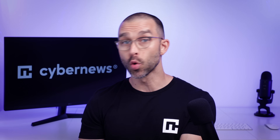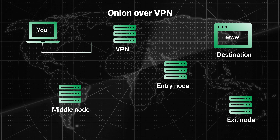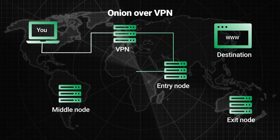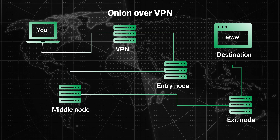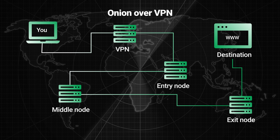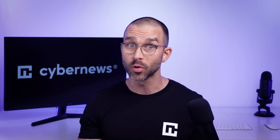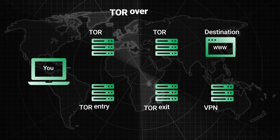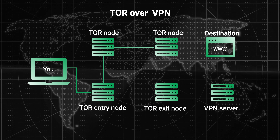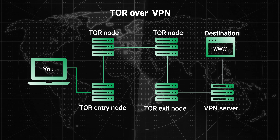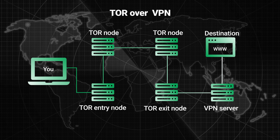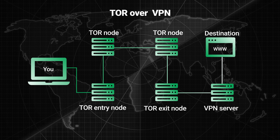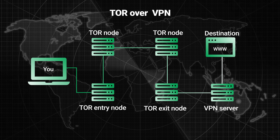The VPN and Tor combination can go both ways. Onion over VPN first connects you to a VPN server, encrypts your traffic, changes your IP, and only then it accesses the Tor network. The VPN over Tor principle works the other way around. This allows you to visit websites that normally block Tor traffic, but it's much more difficult to configure. It doesn't protect your IP address from the Tor entry node, and doesn't hide the fact that you're using Tor from your ISP.